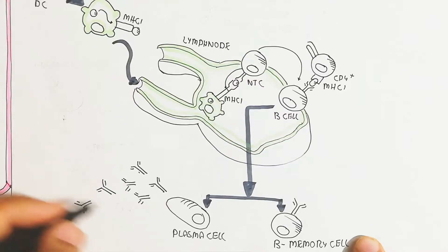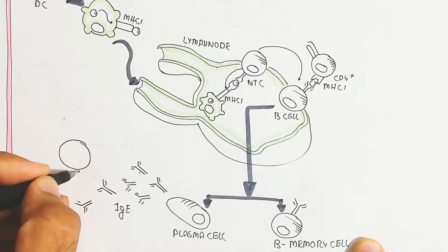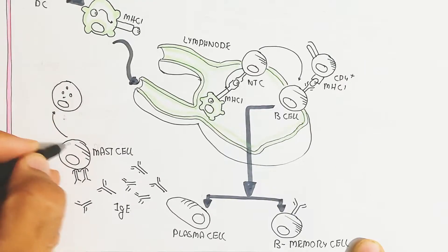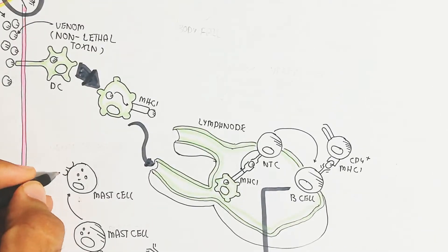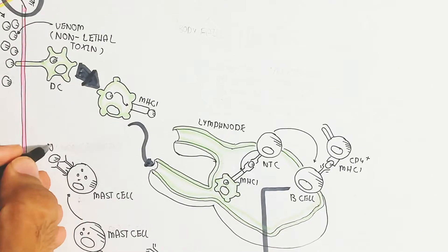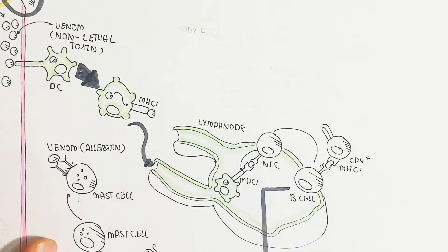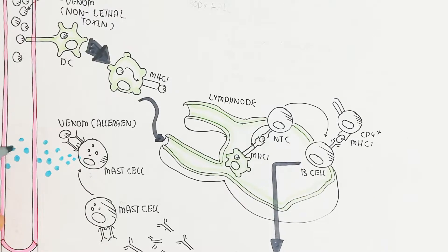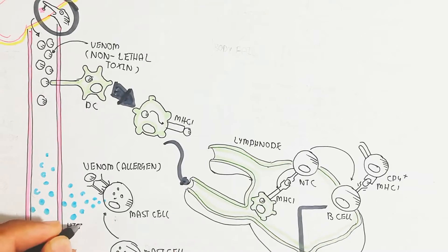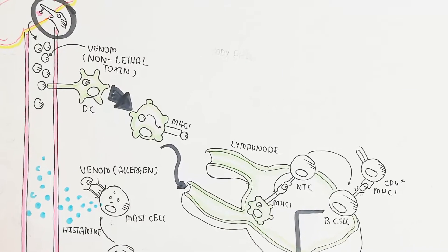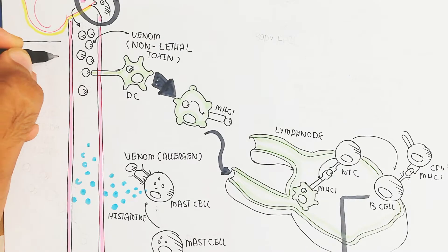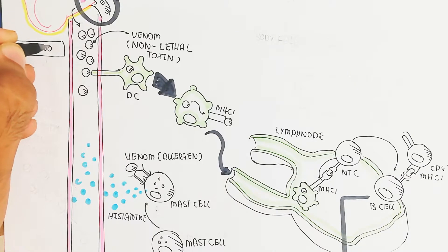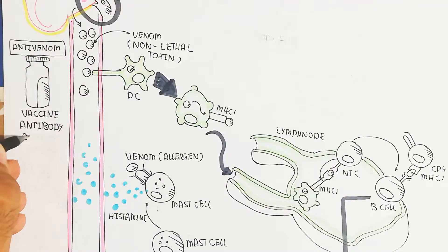Plasma cells produce large amounts of IgE antibodies to enhance the allergic reaction. The IgE immunoglobulin binds with mast cells present in the tissue, forming receptor sites where the venom binds with the light chain of the immunoglobulin as a receptor, triggering the release of histamine. Histamine causes contraction of blood vessels, leading to hypersensitivity and increased blood circulation.